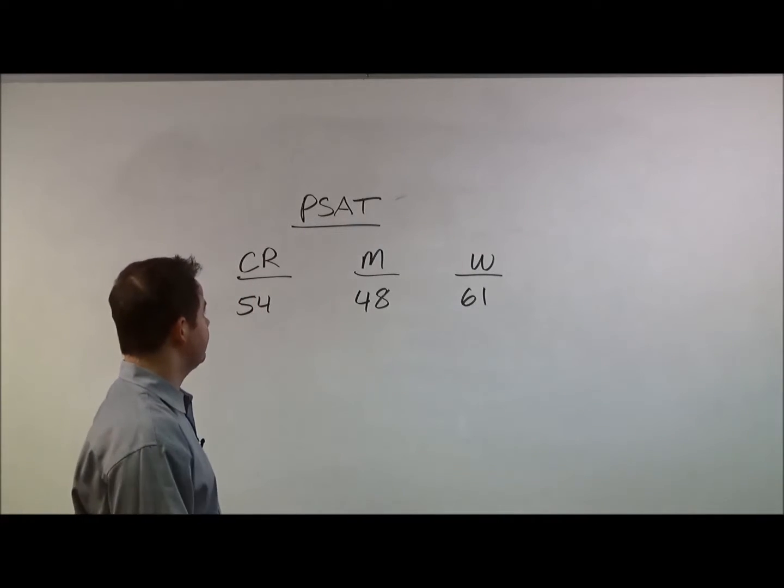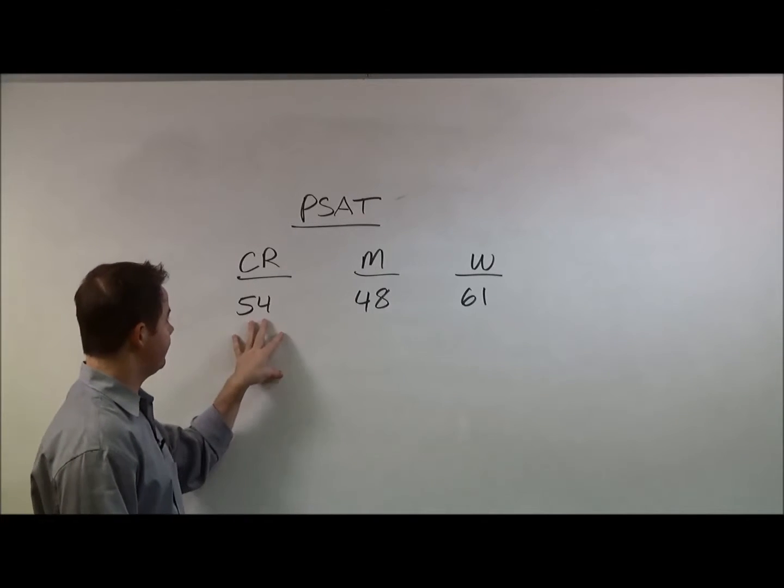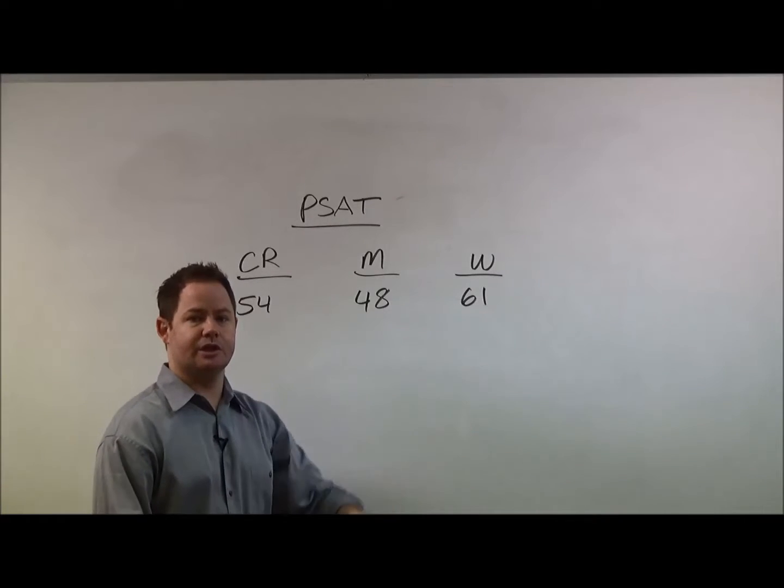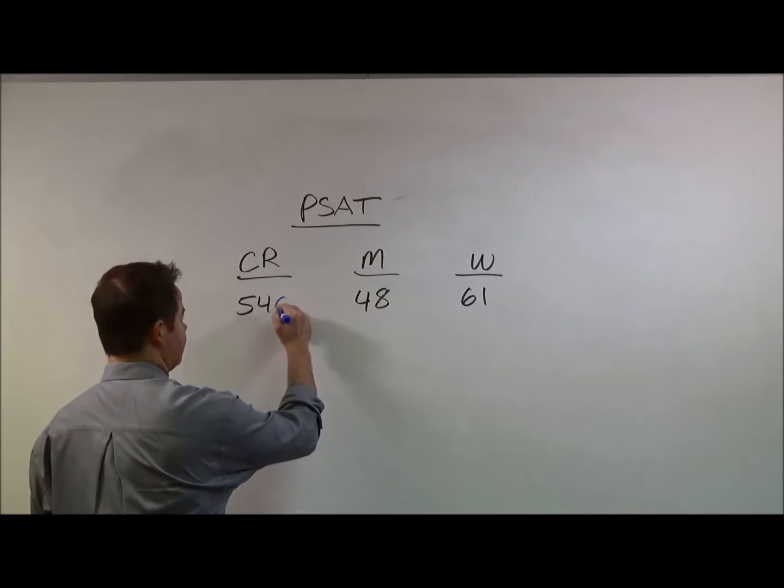All you need to do with each score, for example, in this sample set here, if you got a 54 in the critical reading, a 48 in the math, or a 61 in the writing, to convert that into an SAT score, you would simply add a zero to each one.